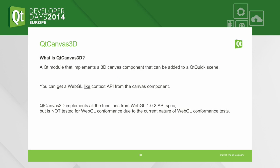Qt Canvas 3D is a Qt module that implements a 3D Canvas component you can inject into your Qt Quick scene just like any other Qt Quick component. That allows you to get a WebGL-like context API from the Canvas component. I stress 'like' because even though Qt Canvas 3D implements all the functions from the WebGL 1.0.2 API, it is not tested to be conformant — the current WebGL conformance tests are HTML pages and it's difficult to run those in a QML scene.